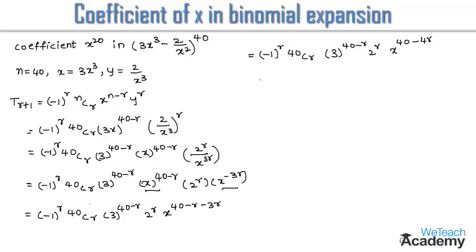Since we have to find the coefficient of x power 20, let us equate the power of x with 20. The power of x is 40 minus 4r, so let us equate it with 20.